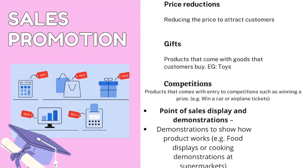Sales promotion — there are different types. First is price reduction: they reduce the price to attract customers and perform more sales. Another type is gifts, where when a consumer buys a product, another gift is included — for example, toys that come with cereal as a complimentary item to attract customers. Another type is competitions, where products come with entry to a competition such as winning a prize like a car or an airplane ticket.